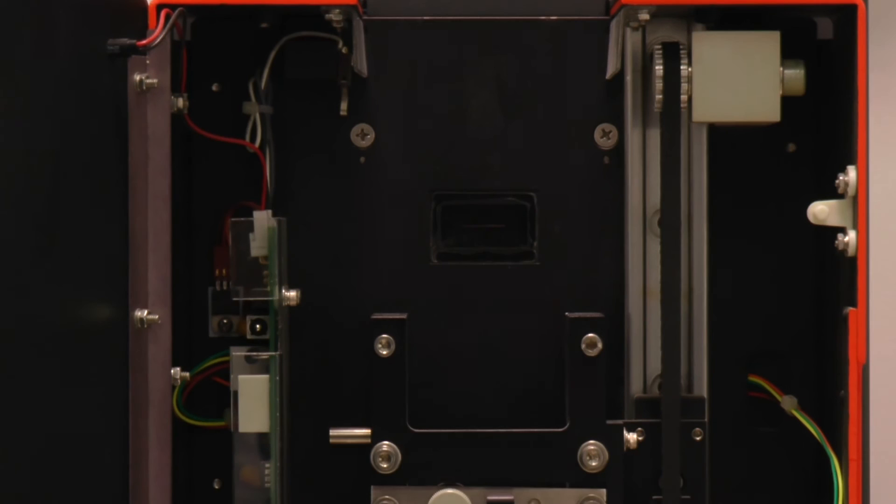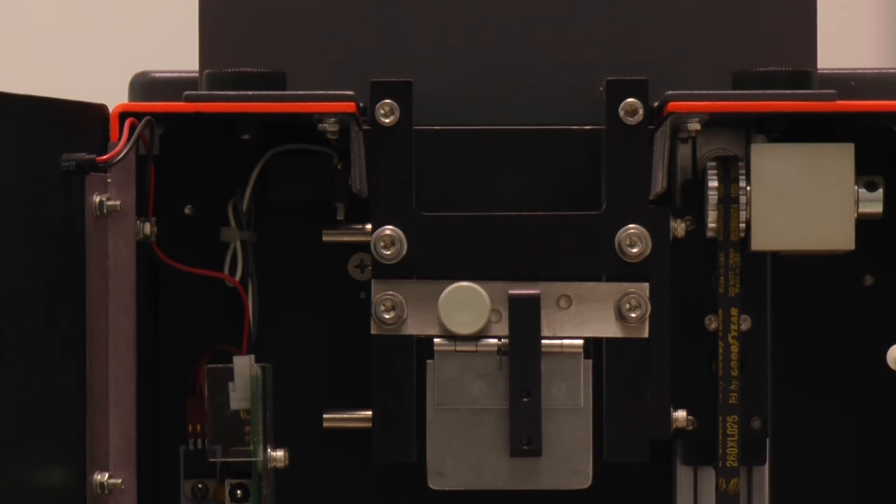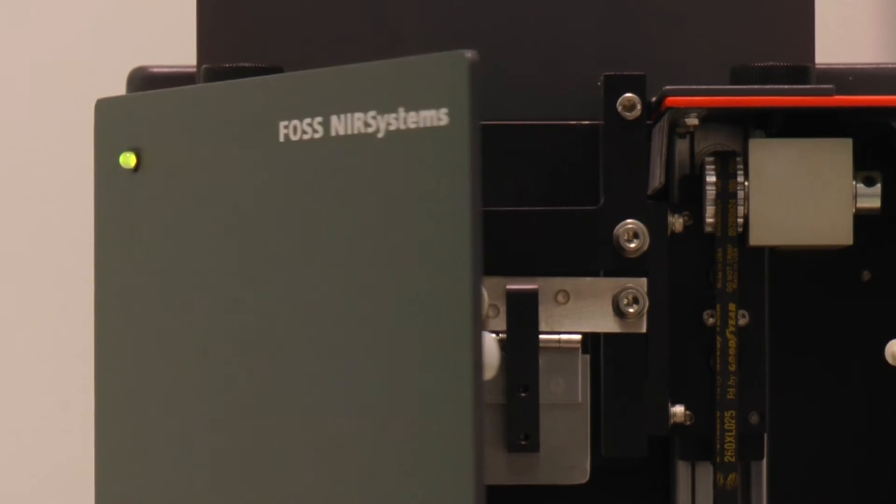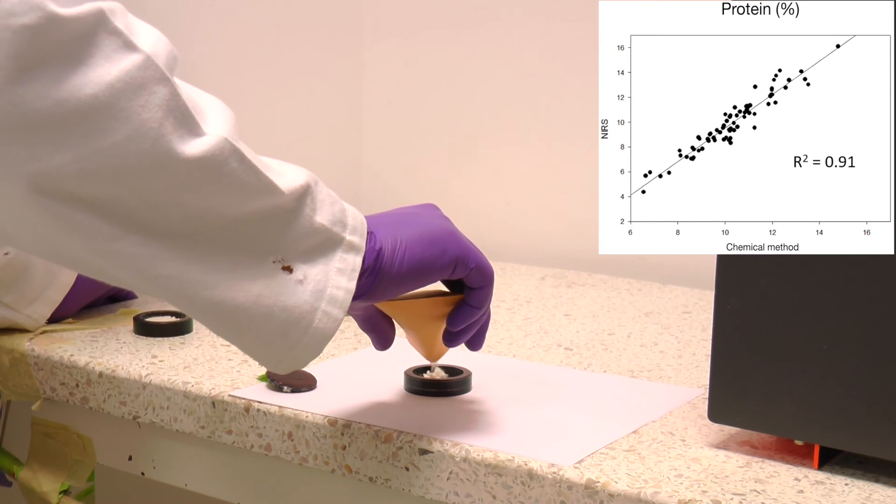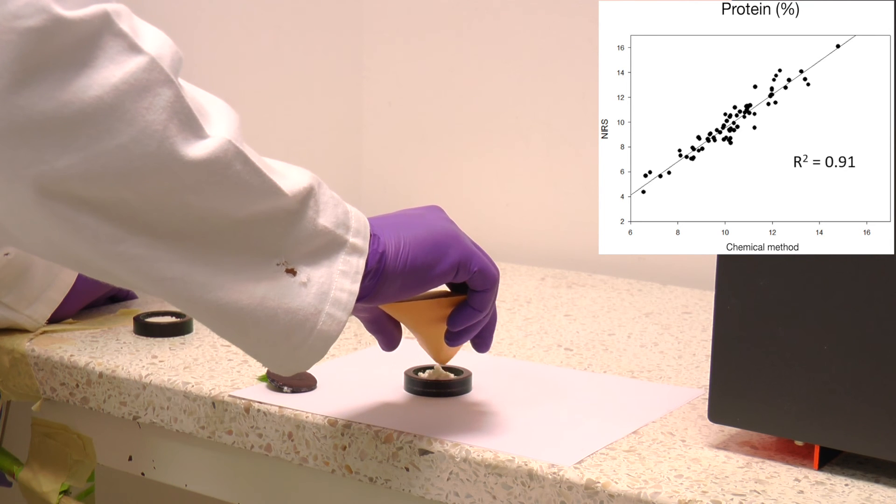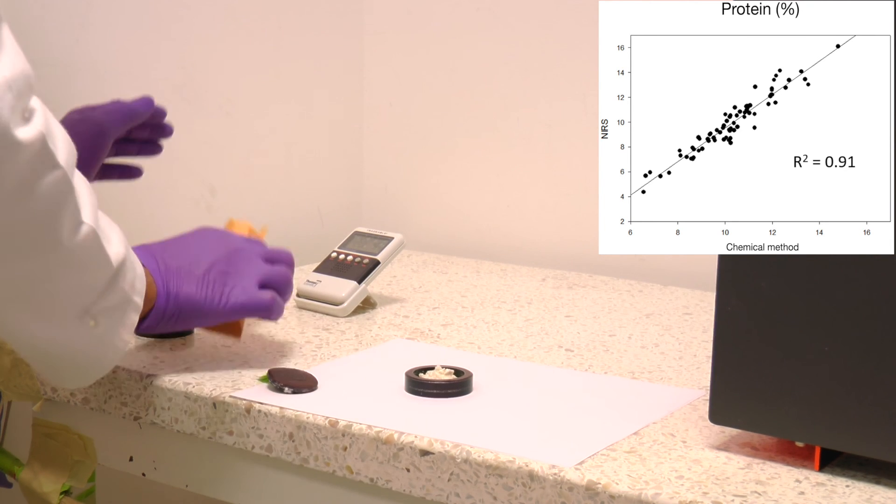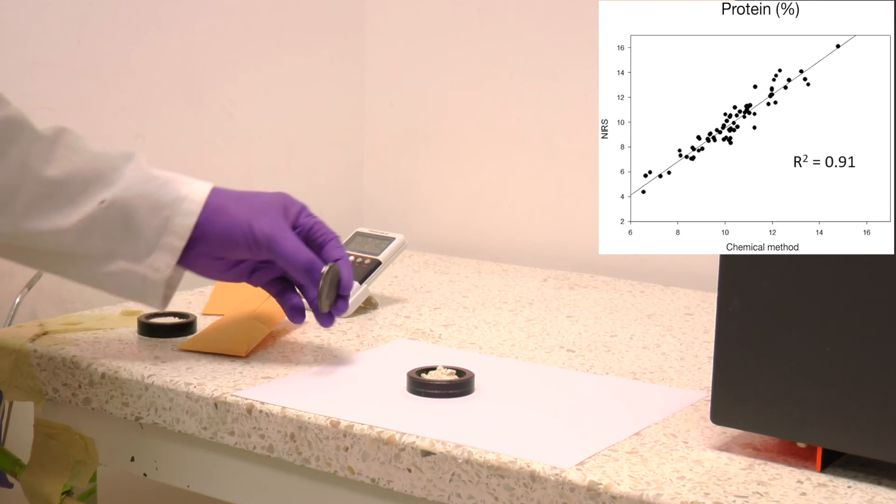For this reason, a model for predicting the protein content in maize flour using near-infrared spectroscopy was developed. This model allows the percent protein in a sample to be estimated in less than a minute, at a low cost and with minimal processing, since the maize grain just has to be ground.